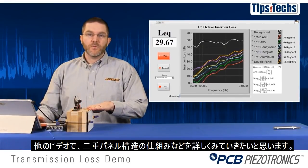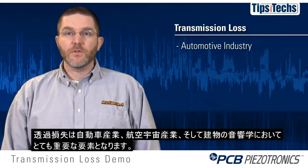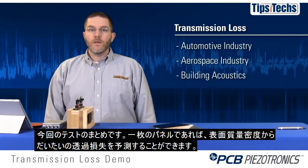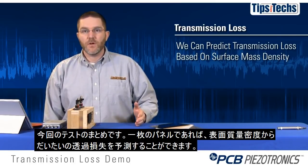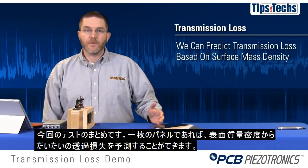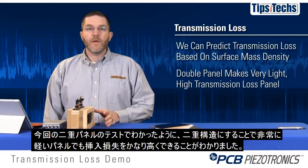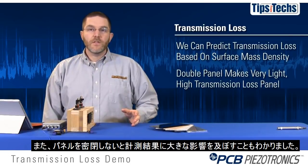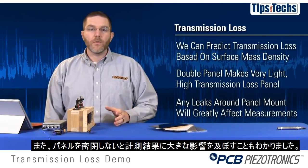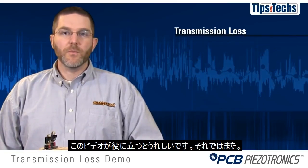In future demonstrations we'll talk about double panel systems and the theory behind those. Transmission loss is a very important factor in the automotive, aerospace, and building acoustics industries. In conclusion, what we saw in this demo was that we can make a very good prediction of single panel transmission loss using just the surface mass density of the panels. But that's not the only thing to consider: the double panel example showed that we can make a very light, very high transmission loss panel using double panel construction. Additionally, any leak area around your panel mount will greatly affect your measured transmission loss. I hope this demonstration was informative and I hope to see you next time.